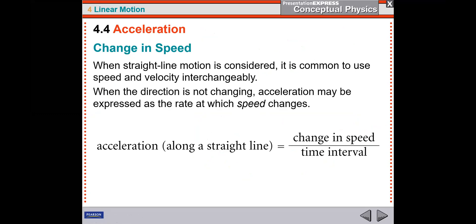When straight-line motion is considered, it is common to use speed and velocity interchangeably when the direction is not changing. If I am walking along a straight line, I will not say it is a change in velocity over time — I will say it is a change in speed. But if the acceleration involves a changing direction, then I say it is delta v, the change in velocity, over time.